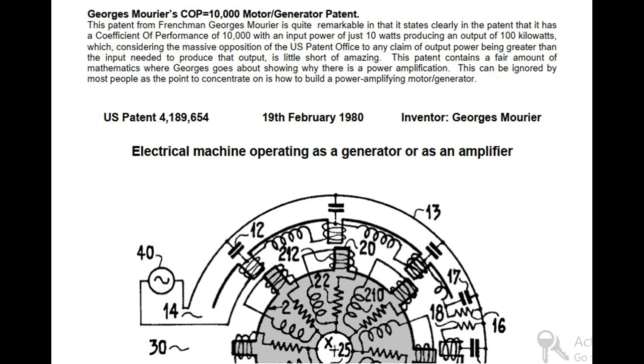George Mourier's Coefficient of Performance equals 10,000 Motor Generator Patent. This patent from Frenchman George Mourier is quite remarkable in that it states clearly in the patent that it has a coefficient of performance of 10,000 with an input power of just 10 watts producing an output of 100 kilowatts. Considering the massive opposition of the U.S. Patent Office to any claim of output power being greater than the input needed to produce that output, this is little short of amazing. This patent contains a fair amount of mathematics where George goes about showing why there is a power amplification. This can be ignored by most people as the point to concentrate on is how to build a power amplifying motor generator.